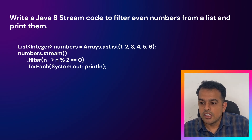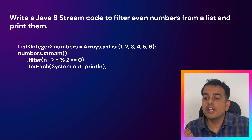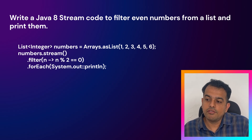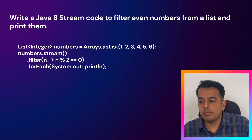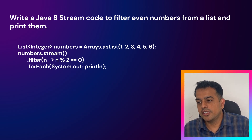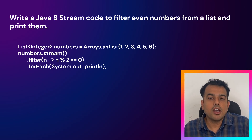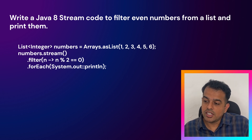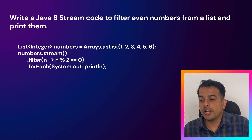The predicate defines the condition — in this case, we need even numbers only. If a number is even, the remainder will be zero, so this condition gives us only even numbers. Then there is a terminal operation called forEach, which prints all the numbers. So the code creates a list, uses stream and filter to find even numbers, then prints them one by one.